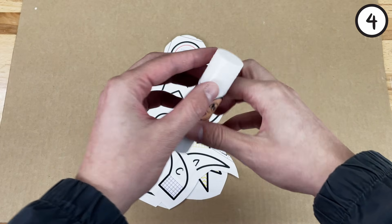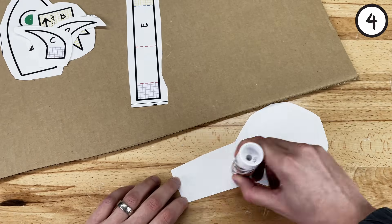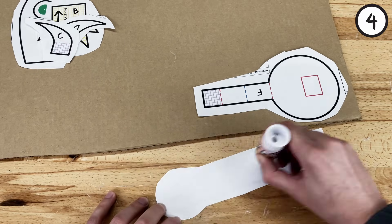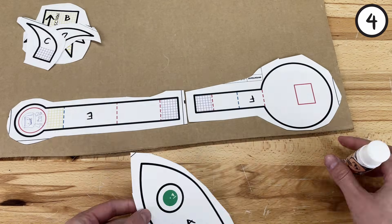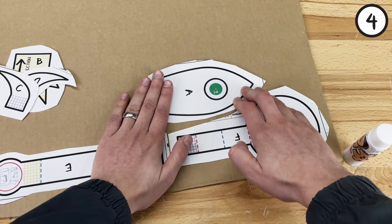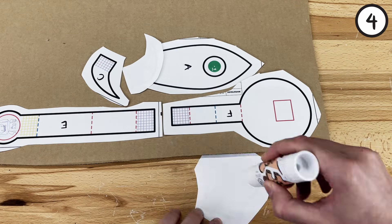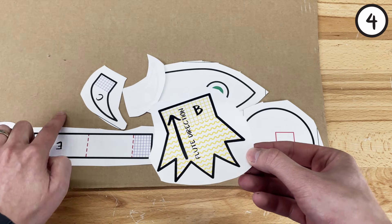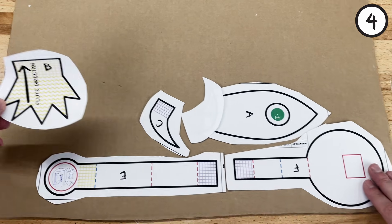Step 4. Glue the shapes to your cardboard, being sure to use the space efficiently. Also, make sure the arrow on the flames, Part B, align with the direction of the cardboard flutes.